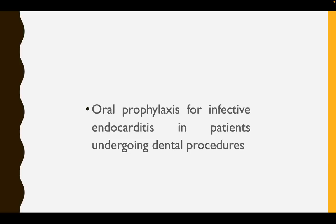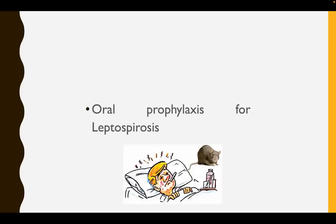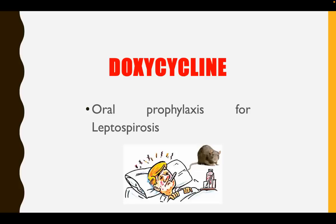What is the drug we give for oral prophylaxis for infective endocarditis in patients undergoing dental procedures? We give amoxicillin. Be careful if the patient has allergies to penicillin. What is the oral prophylaxis for leptospirosis? We give doxycycline. Don't forget, for severe leptospirosis, the drug of choice is intravenous penicillin.